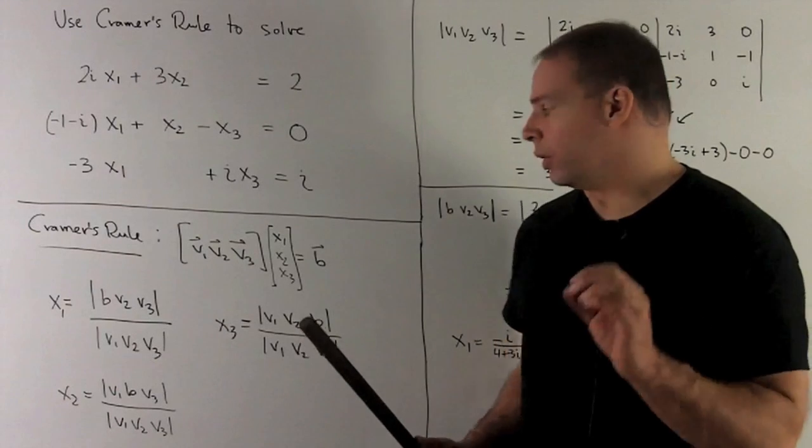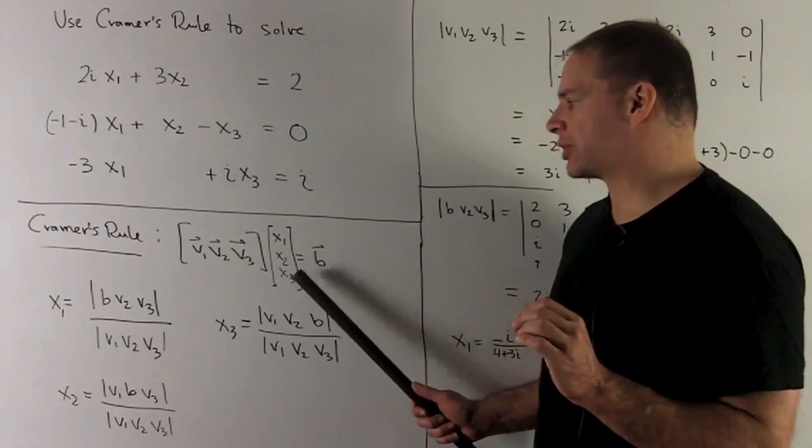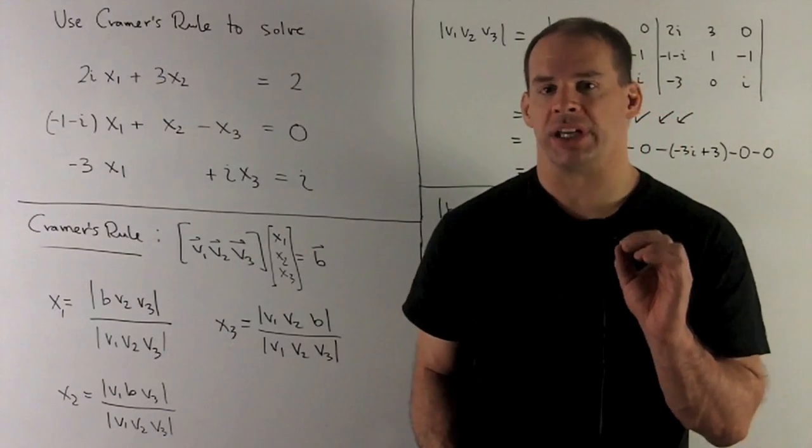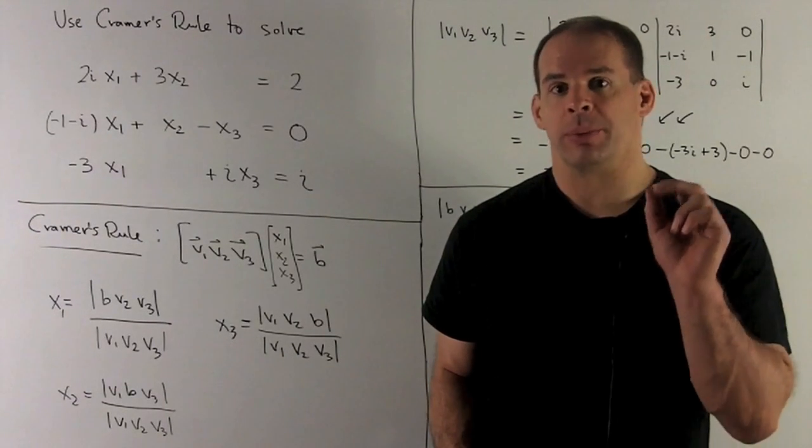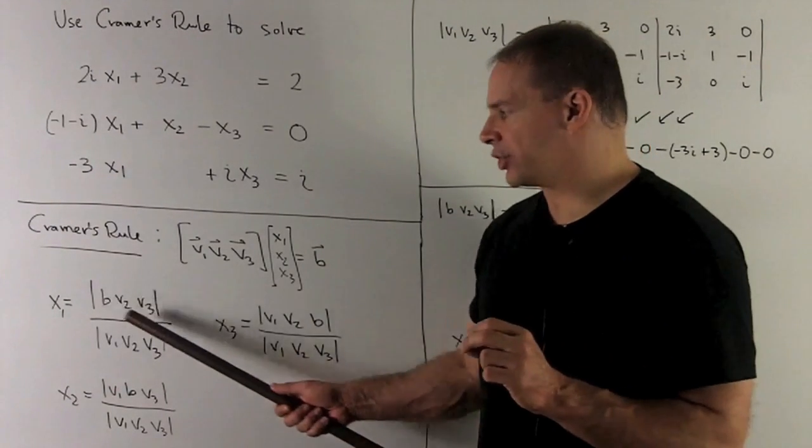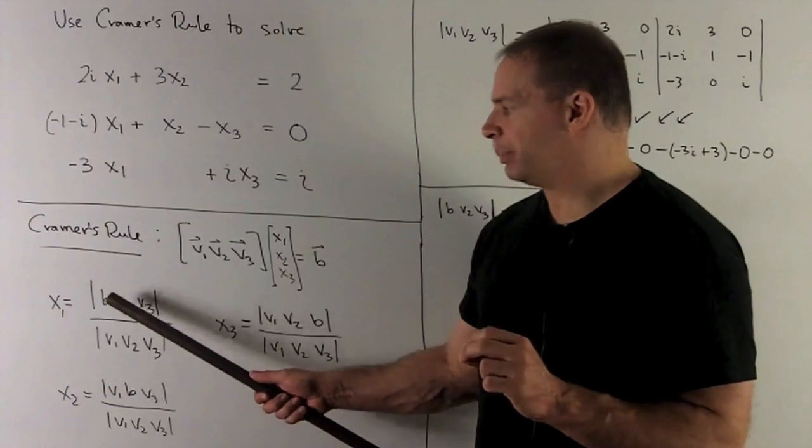Our vector of unknowns X1, X2, and X3. And then how do we proceed? To get X1, we take V1, replace it with B.